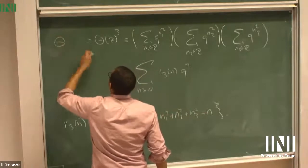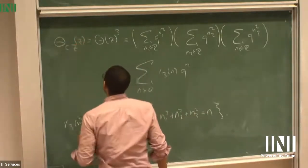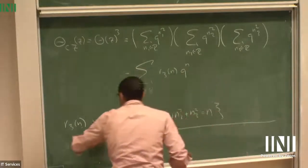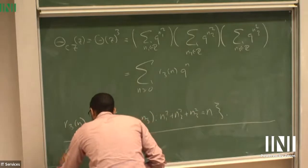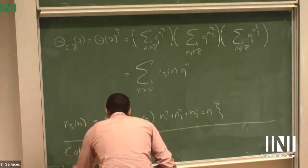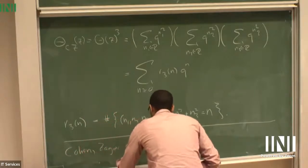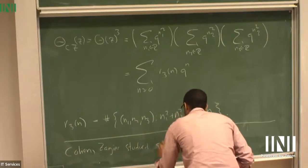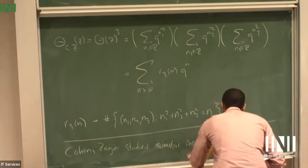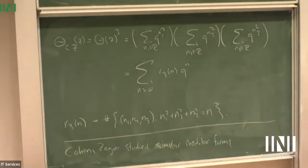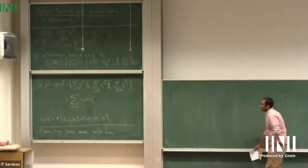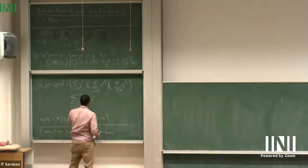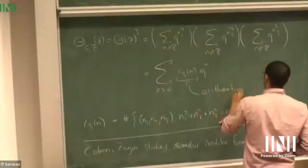Spencer and I call this modular form E sub CZ of Z, after Henri Cohen and Don Zagier, who studied a more complicated but similar modular form. Cohen in two separate papers studied analogous forms. The first surprising fact about theta of Z cubed is that these Fourier coefficients R3 of N turn out to be very arithmetically interesting.